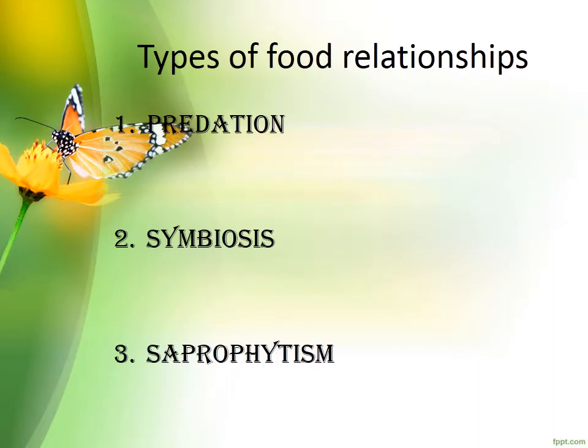The types of food relationship: we have three types of food relationship. The first one is predation. Second, symbiosis. Three, saprophotism.